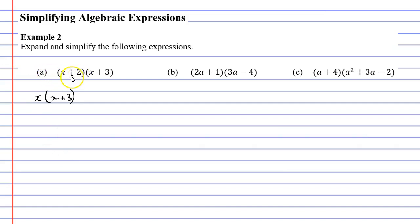The next thing we had was a 2, which is a positive 2, so we write this as plus 2, and this is also being multiplied by x plus 3. So we've split up the x and the 2 and put x plus 3 next to both terms. This is useful because if you like to draw little arcs, it's not as messy.